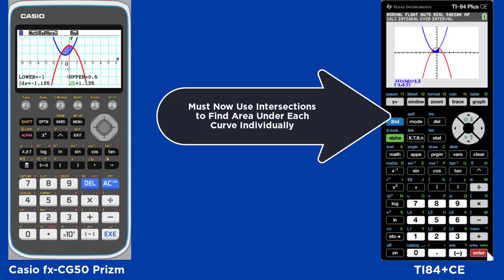Notice we're first getting the area under the curve using the intersections we found for the blue curve first, and then we do the same process for the red curve using the two intersections found previously.